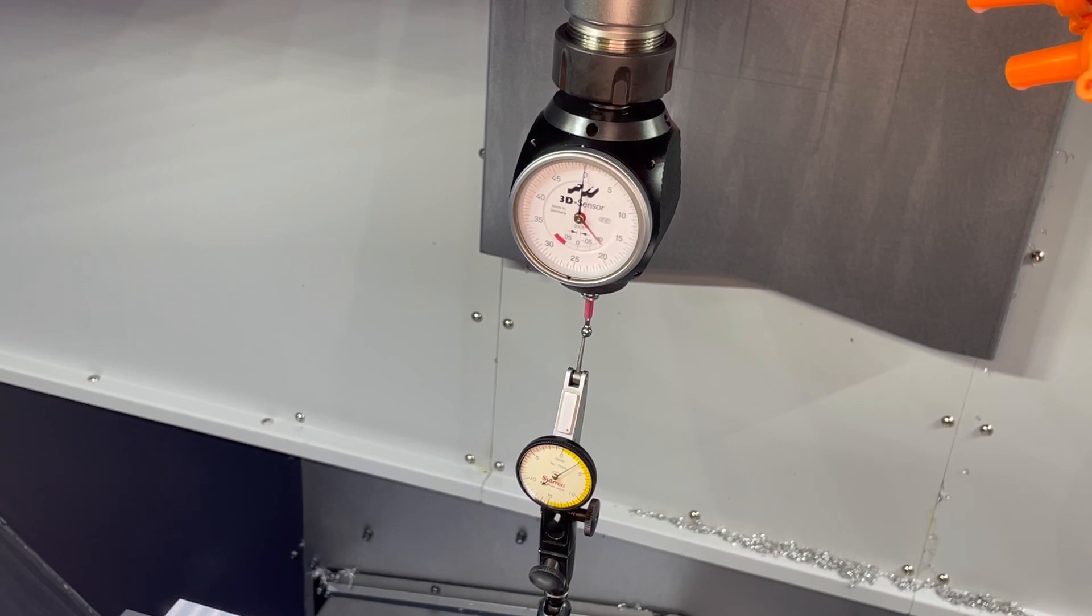As you can see it's about at the three thousandths mark in the yellow section of the indicator here, where our high spot is. So now to zero that out we're going to do that on the Z axis this time.